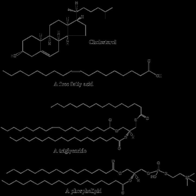Saccharolipids describe compounds in which fatty acids are linked directly to a sugar backbone, forming structures that are compatible with membrane bilayers. In the saccharolipids, a monosaccharide substitutes for the glycerol backbone present in glycerolipids and glycerophospholipids. The most familiar saccharolipids are the acylated glucosamine precursors of the lipid A component of the lipopolysaccharides in gram-negative bacteria. Typical lipid A molecules are disaccharides of glucosamine, which are derivatized with as many as seven fatty acyl chains. The minimal lipopolysaccharide required for growth in E. coli is KDO2-lipid A, a hexa-acylated disaccharide of glucosamine that is glycosylated with 2,3-deoxy-D-mannooctulosonic acid residues.